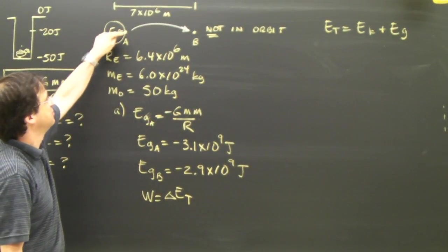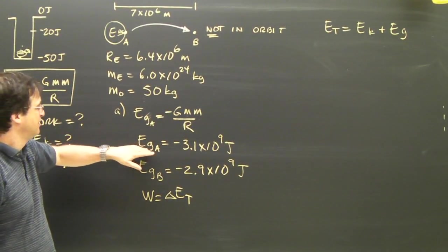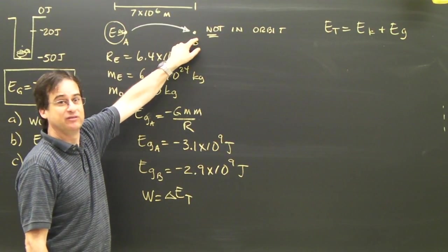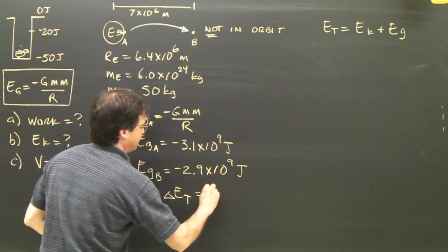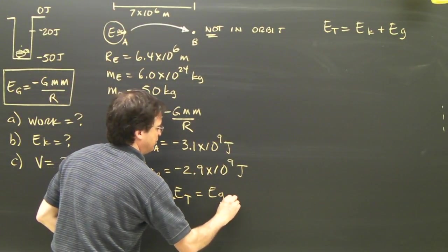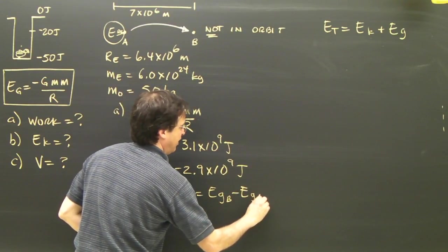so this happens to be the total energy at that point. This happens to be the total energy at that point. So the total energy of the difference is the gravitational at B minus the gravitational at A.